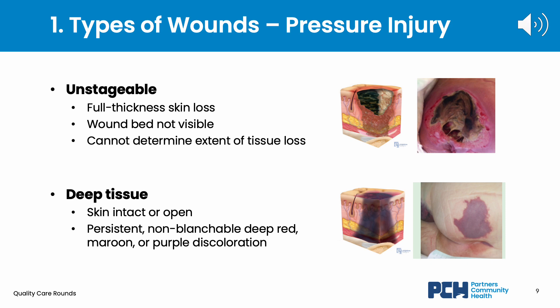A similar type of pressure injury is a deep tissue pressure injury, which is classified by persistent, non-blanchable, deep red, brown, or purple discoloration. This contrasts a stage 1 which is red in color. The skin is usually intact, but it may be open in specific situations.